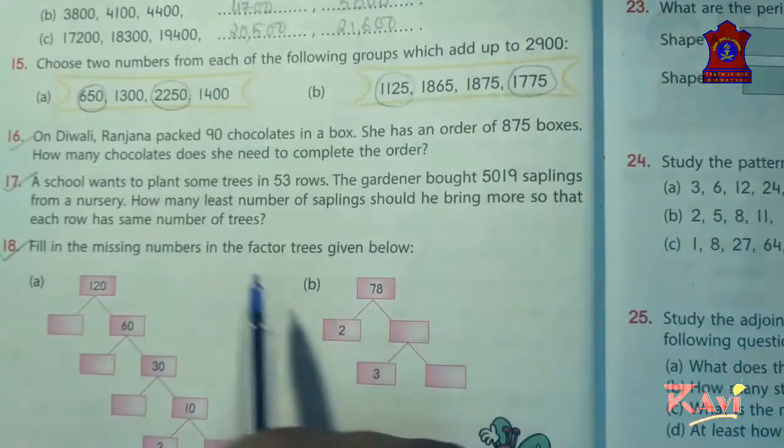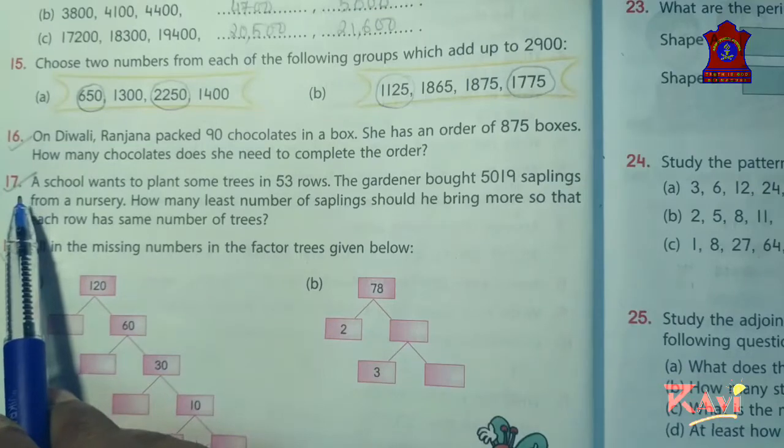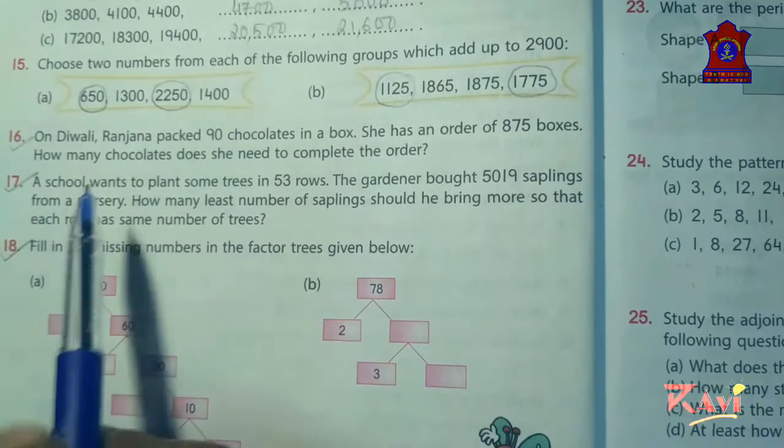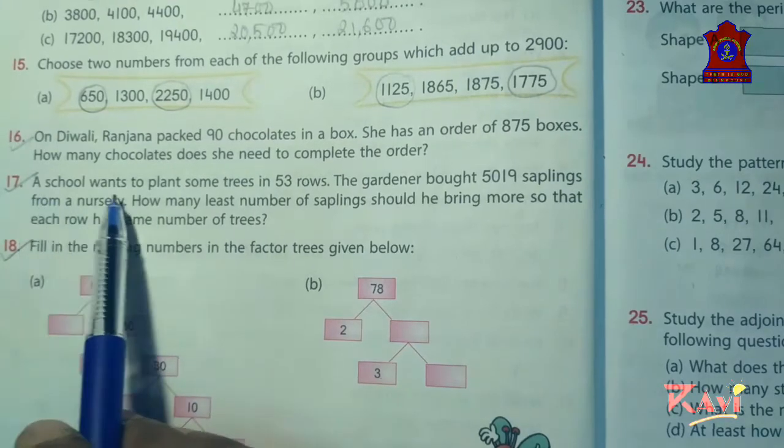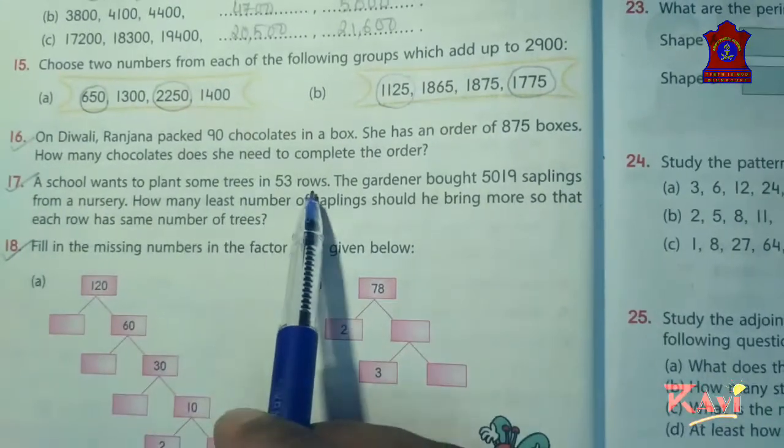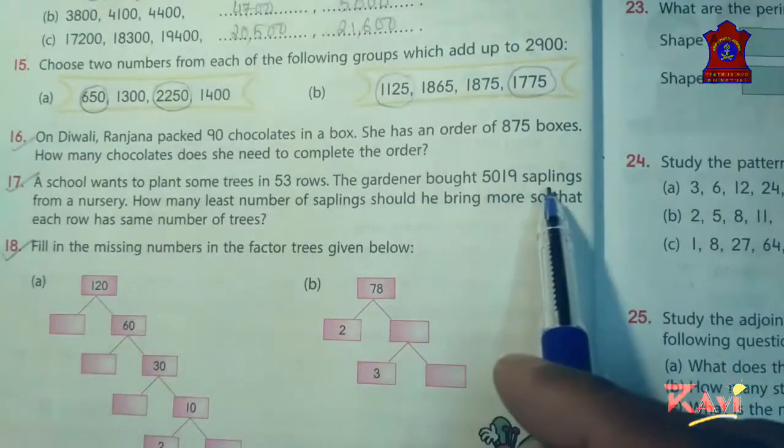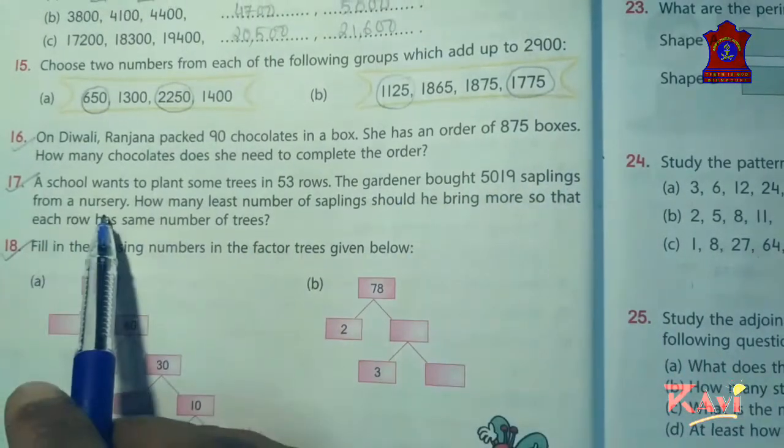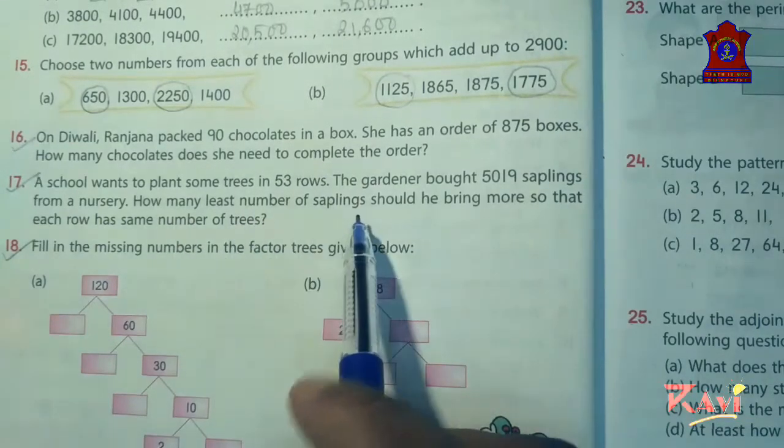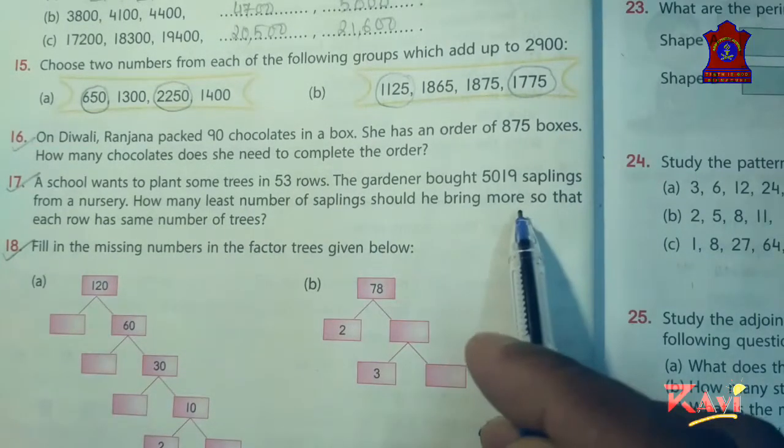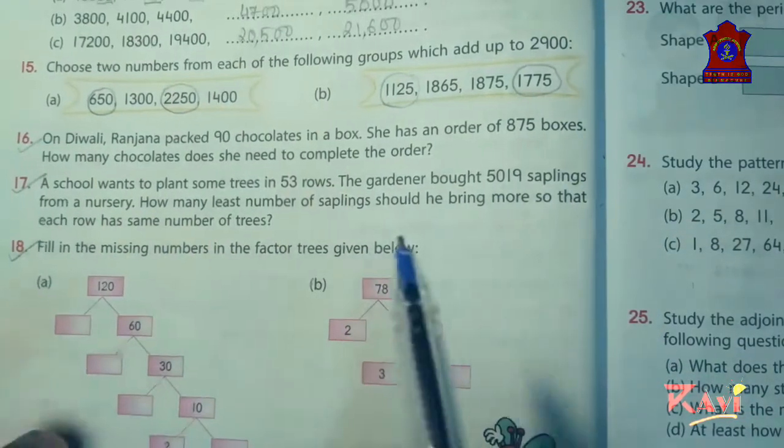Good morning dear students. Today we are going to continue with question number 17 of warm-up exercise. Let's read the question. A school wants to plant some trees in 53 rows. The gardener bought 5019 saplings from a nursery. How many least number of saplings should he bring more so that each row has same number of trees?